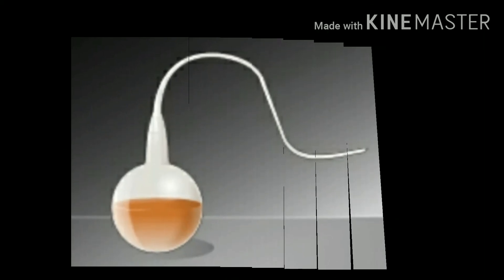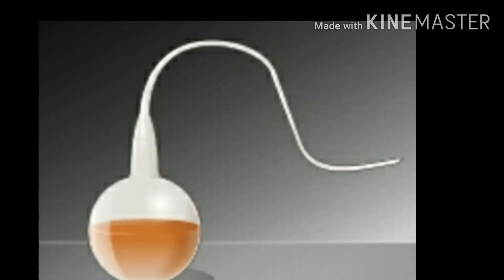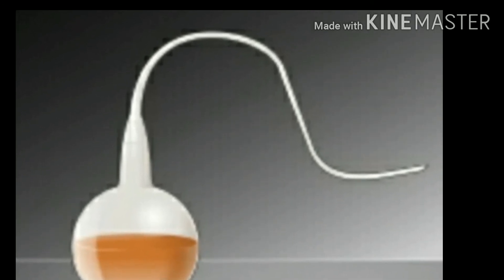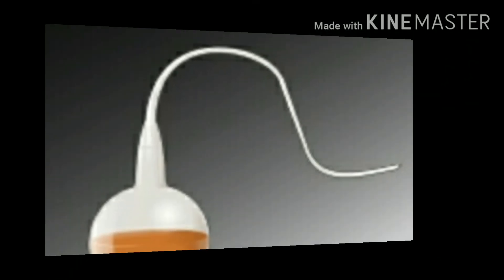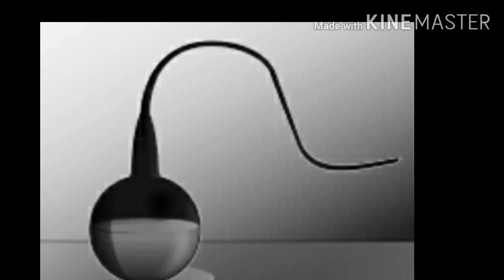Louis Pasteur prepared a flask with long narrow gooseneck opening called swan neck flasks, in which he boiled broth to sterilize it. His design allowed air inside the flasks to be exchanged with air from the outside, but prevented the introduction of any airborne microorganisms which could get caught in the veins.